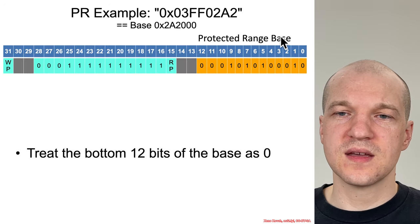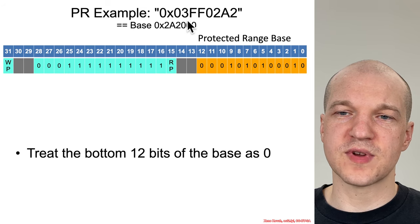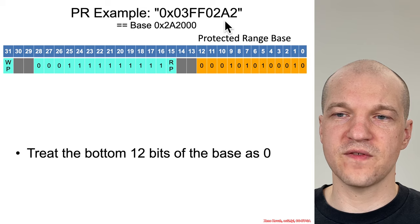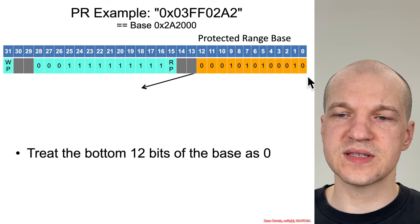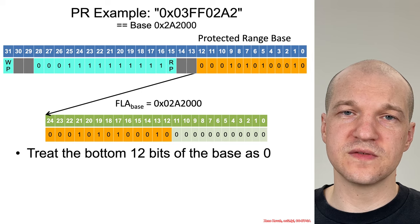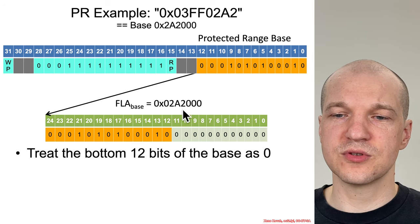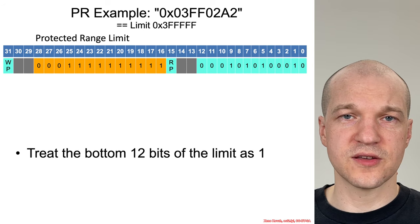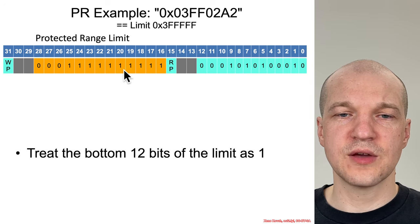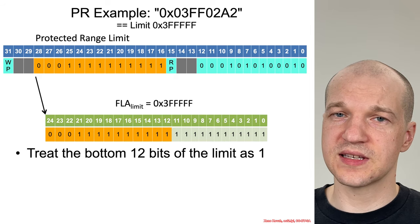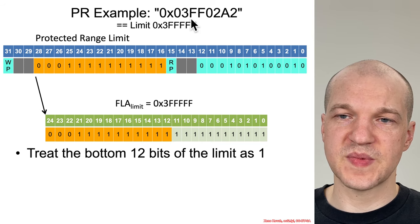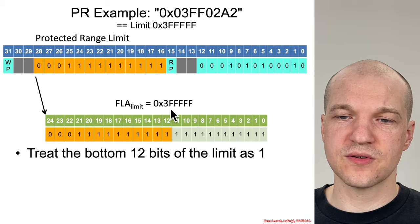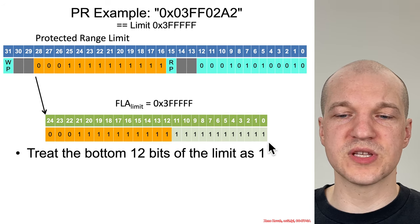If we read out of a protected range register the literal value 03FF02A2, we would interpret it like this: we take the least significant 13 bits, shift them left by 12, and that gives us a base of 02A2000. On the other hand, if we want to understand the limit, we take those 13 bits and tack on 12 bits of all 1s at the least significant end — so taking 03FF gives us 03FFFFF, meaning the least significant bits should be treated as all 1s.